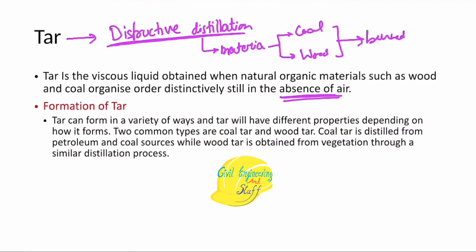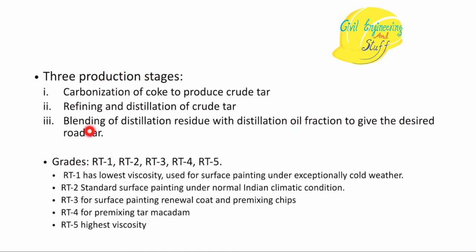The manufacturing of tar through destructive distillation can be divided into three stages. First is carbonization of coke to produce crude tar — the source material is burned in the absence of air until its composition changes. Second, the crude tar undergoes refining and distillation. Third, the crude tar is mixed with some solvent or distillation oil to produce the final tar or raw tar.